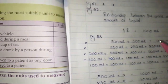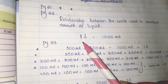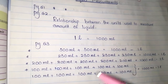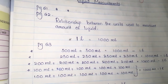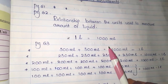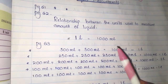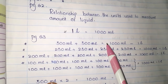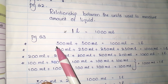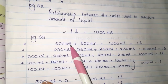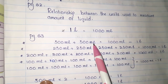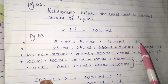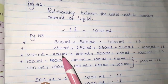You should remember that 1 liter equals 1000 milliliters. This is very important: 1 liter equals 1000 milliliters. To have 1000 milliliters, when you add 500 milliliters plus 500 milliliters, it is equal to 1000 milliliters, and 1000 milliliters means 1 liter.